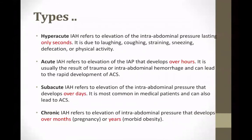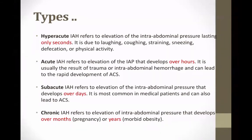We have four types of intra-abdominal hypertension based on the underlying clinical scenario. Hyper-acute occurs with coughing or sneezing — it's very brief, lasting only seconds with no clinical consequences. Acute elevation happens over hours, typically a surgical abdomen such as trauma or perforation. Subacute happens over days and is usually a medical condition — cirrhotic patients are a typical example. Chronic elevation happens over months or years, such as pregnancy and morbid obesity.